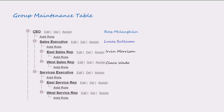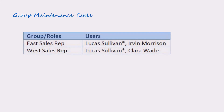This means each rep's users will have access to accounts created by West sales rep users and vice versa. As shown, we have the following users assigned. Setting up the roles will trigger Salesforce to set up the group maintenance table. Membership data is stored on groups that can be system defined and user defined. For this role hierarchy, a system defined group is used with the group name same as the role name.